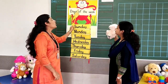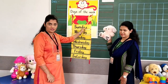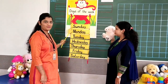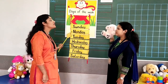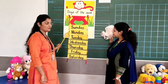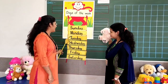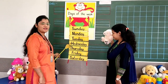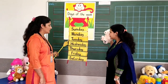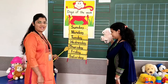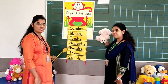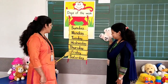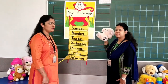Days of the week. The first day is Sunday. The second day is Monday. The third day is Tuesday. The fourth day is Wednesday. The fifth day is Thursday. The sixth day is Friday. The seventh day is Saturday.